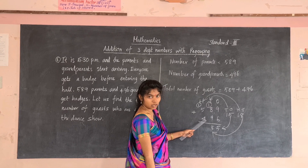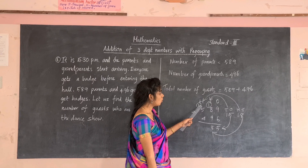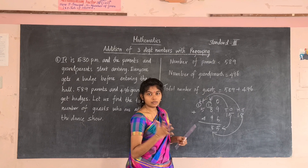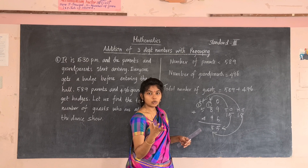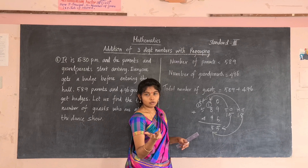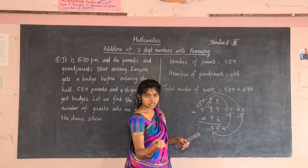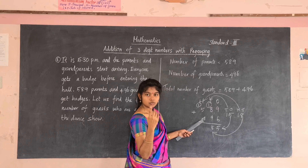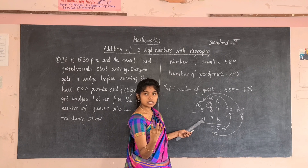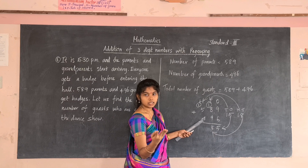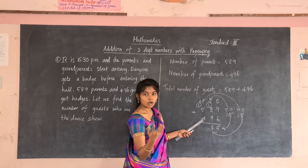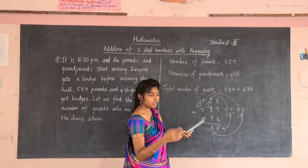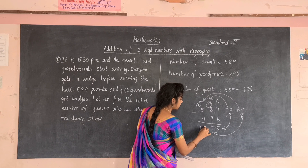Add the three hundreds. Keep one in your mind, take five in the fingers: say after one — two, three, four, five, six. Now six is in your mind; take four in the fingers. Say after six — seven, eight, nine, ten. Write ten in the hundreds place.